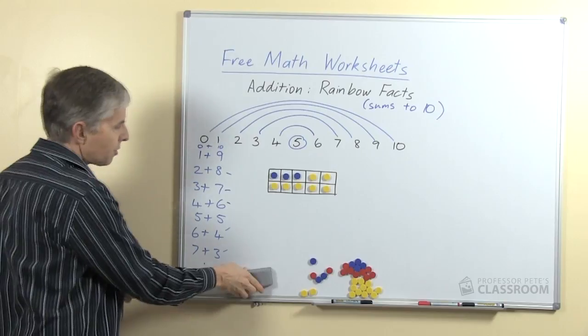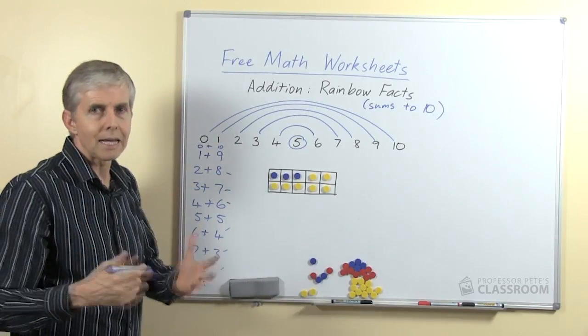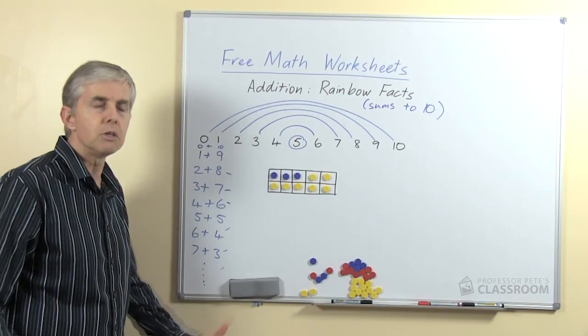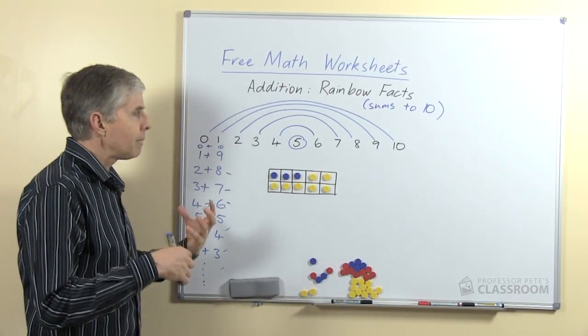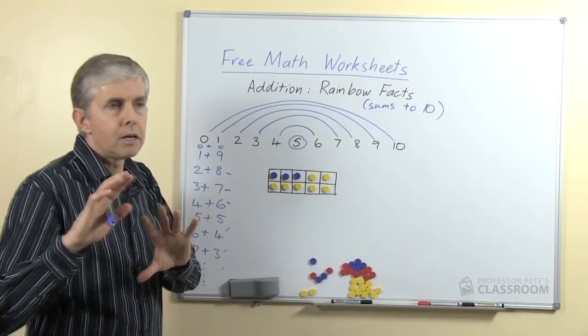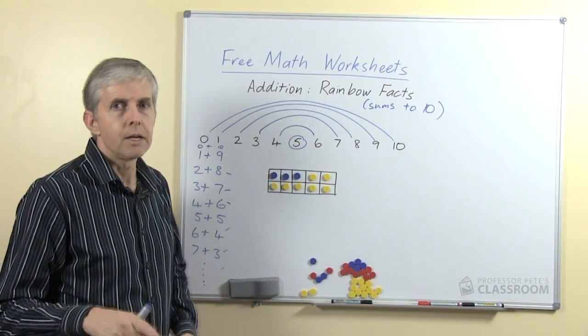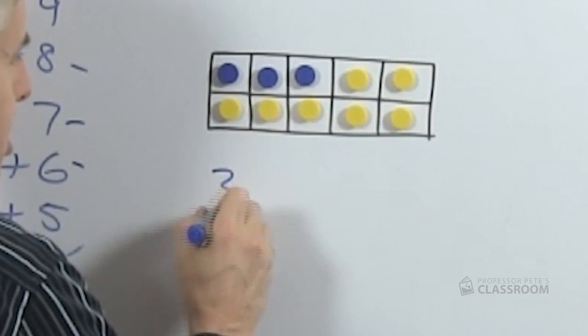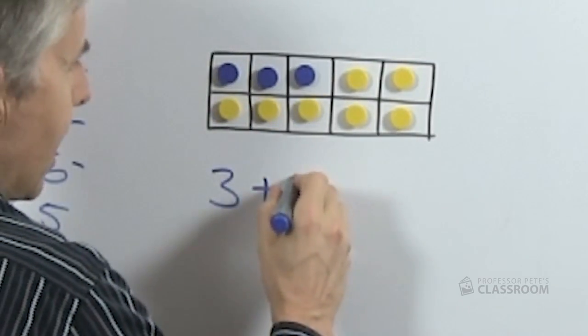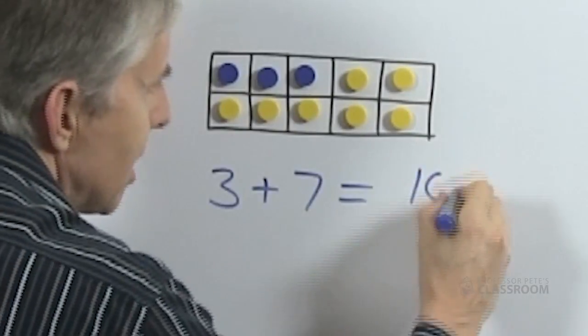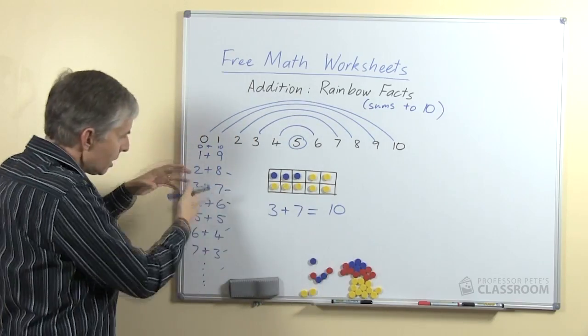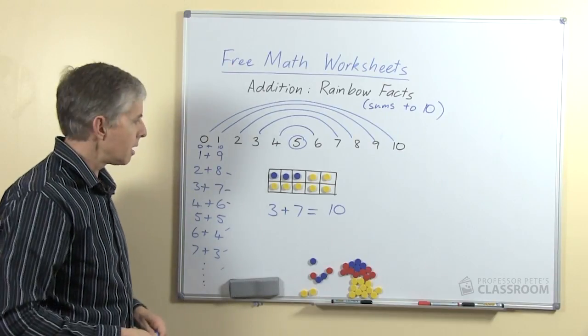Now we can use the ten frames for this because the ten frame already has ten spaces and the students are used to that. We could ask them to do a set of exercises where we say fill the ten frame with two different colors and then write down a number sentence for the addition of the colors. So here a child could say well I've got three blue ones and seven yellow ones and that makes ten. So students could do a whole set of those and that would help them to learn these number facts again.